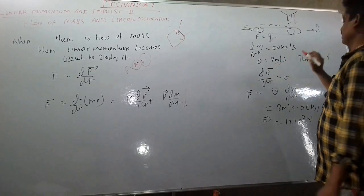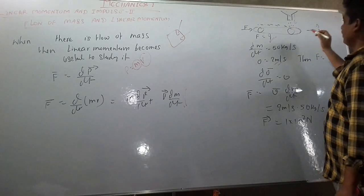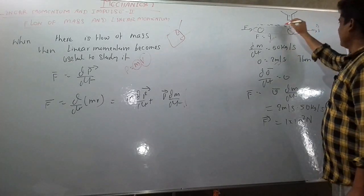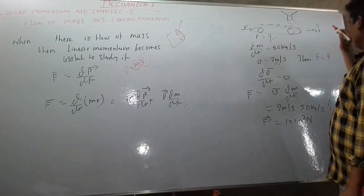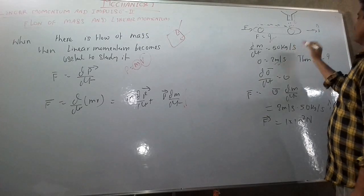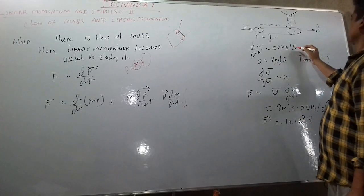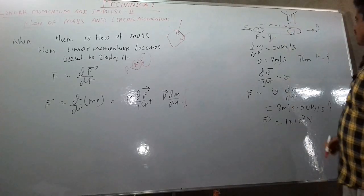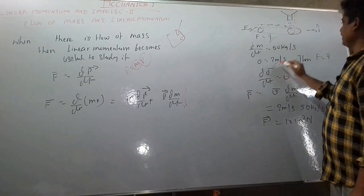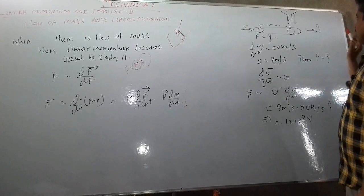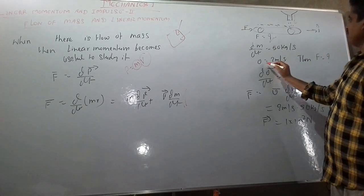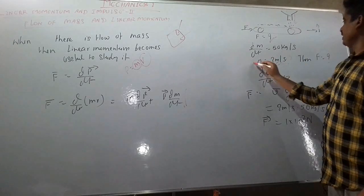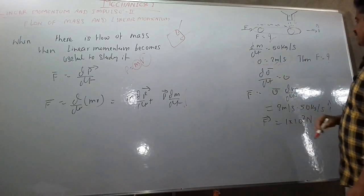So what will be the force? The rate of flow of mass to this belt is 50 kg per second. It means per second 50 kg is pouring on this belt and velocity of this belt is 2 meter per second. We have to find the force needed to maintain this velocity.